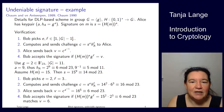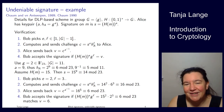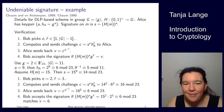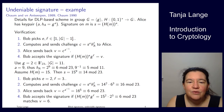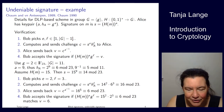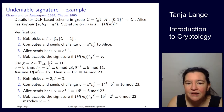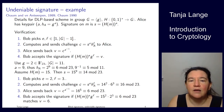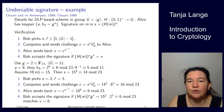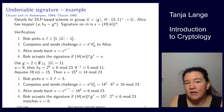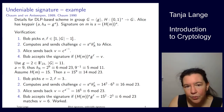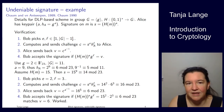Bob independently computes 15^2 · 2^3 = 6, which matches. So he confirms Alice properly signed the message. It's a coincidence that the result matches the public key — there are only 11 numbers in the group — but the verification equation confirms the signature is valid.